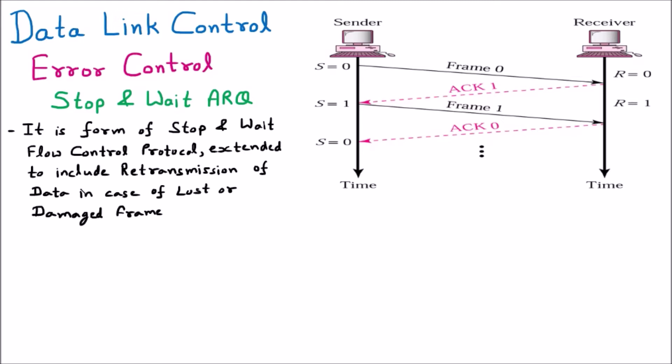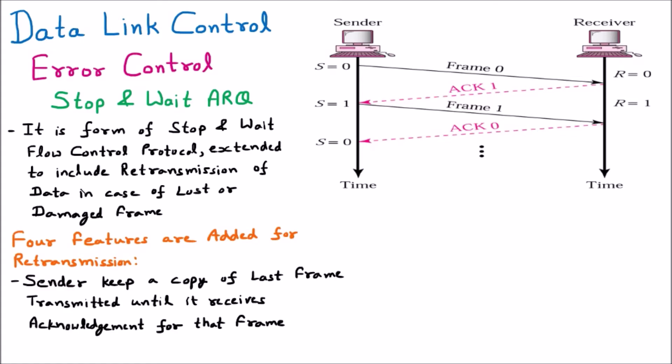There are four features added for retransmission in Stop and Wait ARQ. The first feature is that the sender keeps a copy of the last frame transmitted until it receives acknowledgement for that frame. The sender keeps a copy until it gets the acknowledgement — if the acknowledgement is not fine, the sender has to retransmit that frame, that's why the copy is taken.